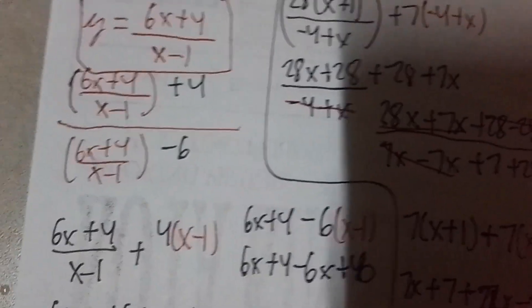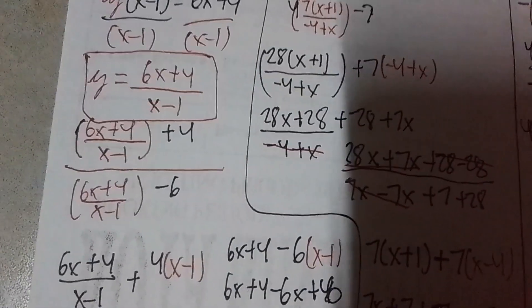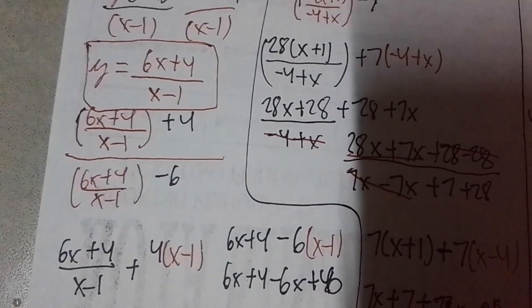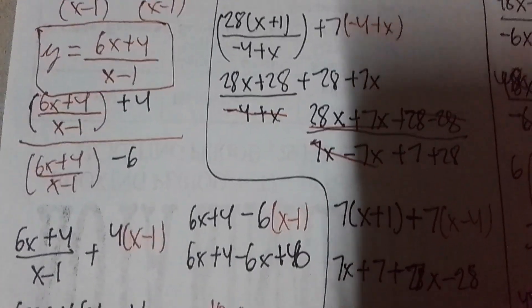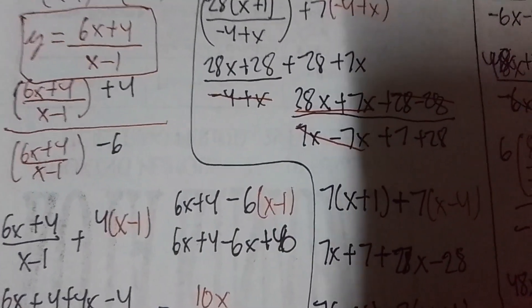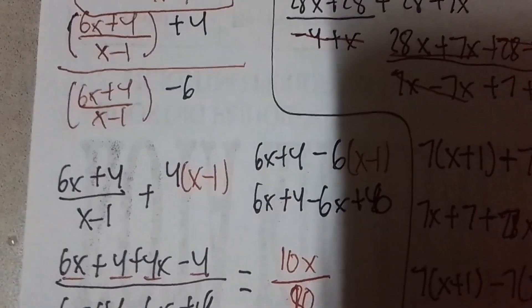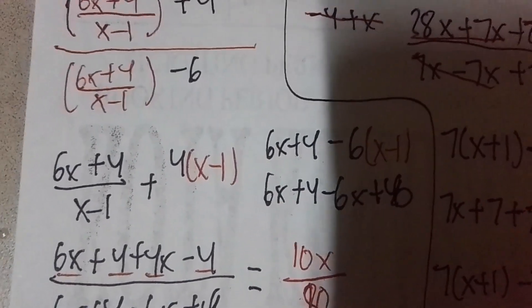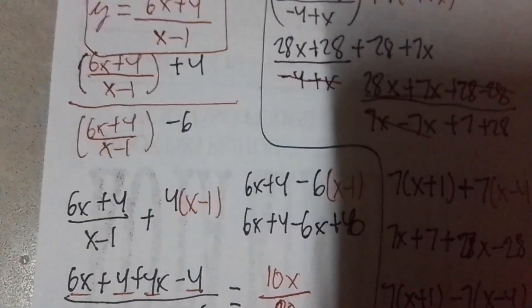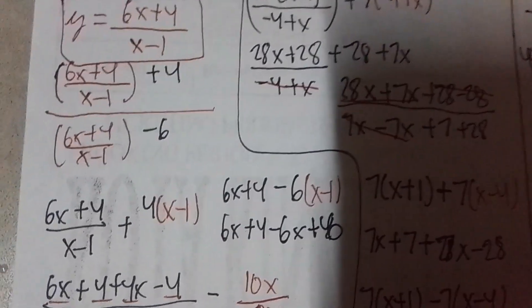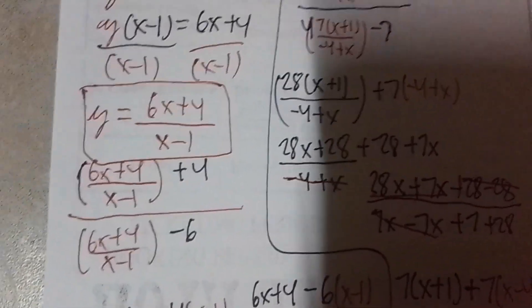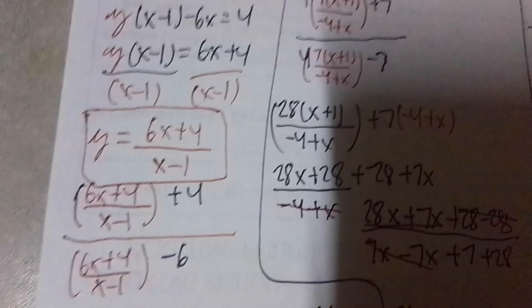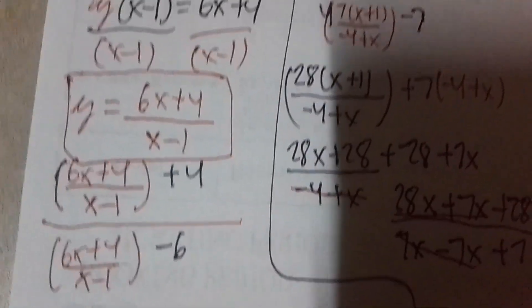So it goes like this: 4 times x is 4x, 4 times negative 1 is negative 4. Cross out whatever is identical: 4 plus negative 4 is 0. 6 times x plus 4x equals 10x. On the other side we have negative 6. So what is the LCD? Again, it's x minus 1. That is your LCD. So multiplying negative 6 by the LCD — remember, on the left side the x minus 1 cancels, and on the right side we have negative 6 times x minus 1.